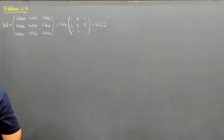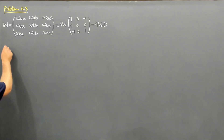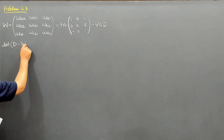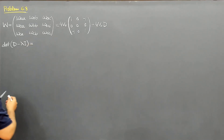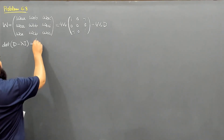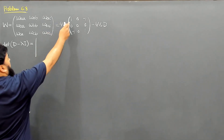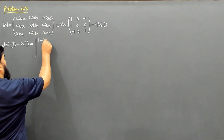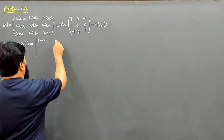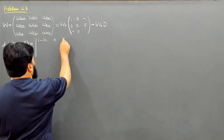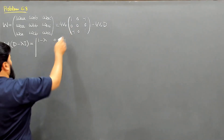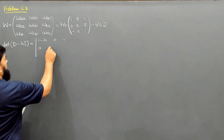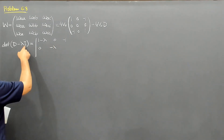I can further find the characteristic equation of this. Let me calculate the determinant of D minus lambda I — the characteristic equation. This is equal to 1 minus lambda on the diagonal, and 0, then minus 1. The diagonal elements will be just minus lambda because the identity matrix contributes 1 on the diagonal.